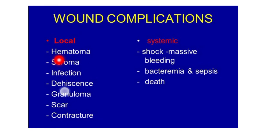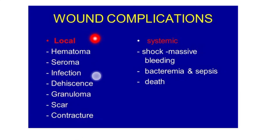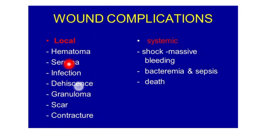Local complications are site-specific, affecting the local area of the wound. Systemic complications affect the entire body. Due to the wound, the blood supply to the patient's whole body can become a systemic problem.